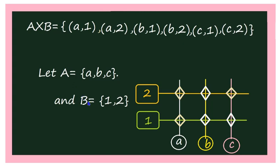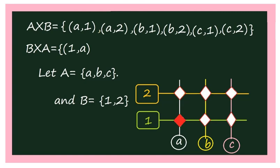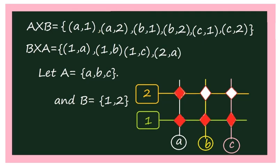Similarly, the persons from the office can go back to the house again through the same junctions, but the route is different. From A to office 1 is one direction, but from office 1 to house A the route is different. That's why you get different ordered pairs, and that is called B cross A. B cross A contains: (1, a), (1, b), (1, c), (2, a), (2, b), (2, c).